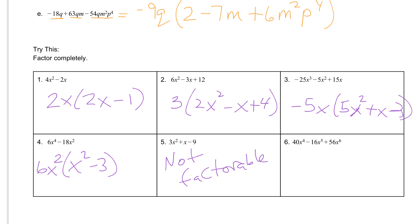And number 6 is 8x to the fourth times (5 minus 2x plus 7x squared). If you have any questions, let me know.